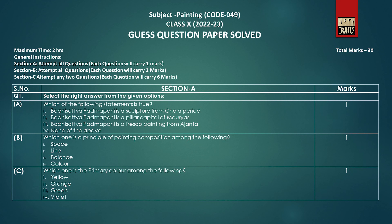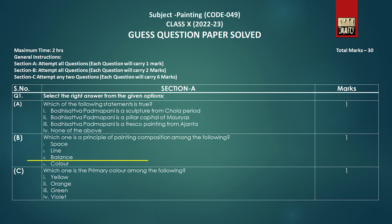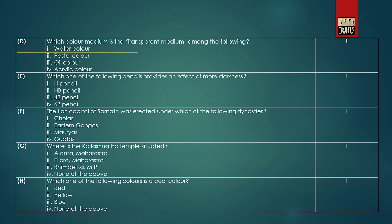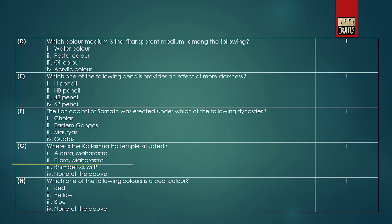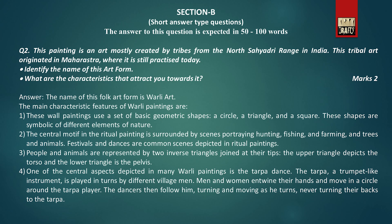Section A contains eight MCQs. Each question will carry one mark. Section B contains short answer type questions and each carries two marks.